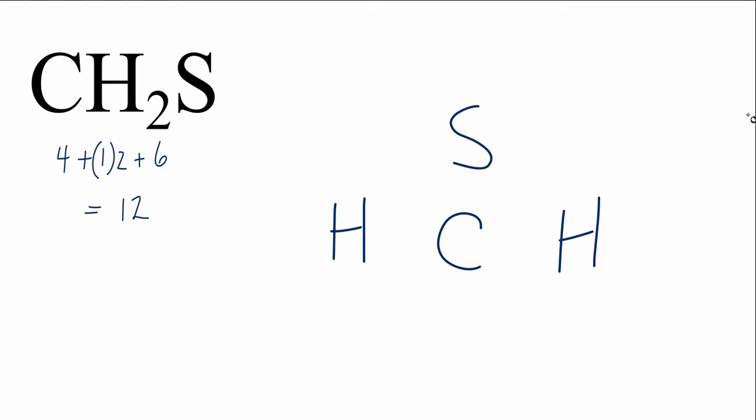First, we're going to put pairs of electrons between atoms to form our chemical bonds. Now that we've done that, we have six more valence electrons. Let's take and put those around the sulfur to complete the octet on the atoms on the outside.